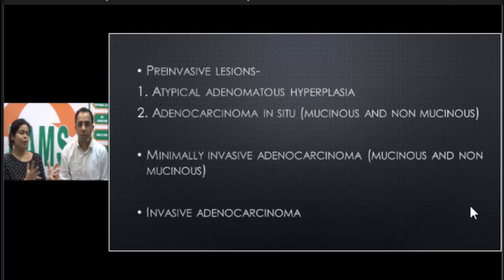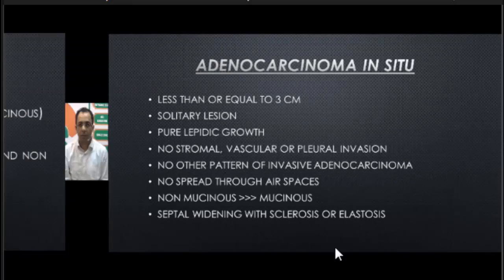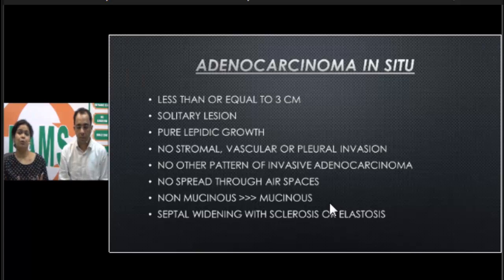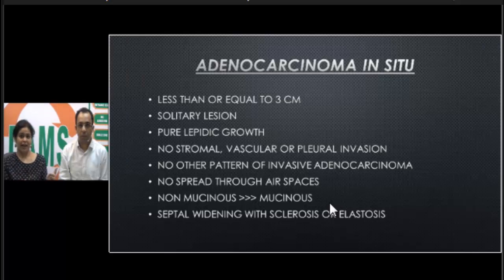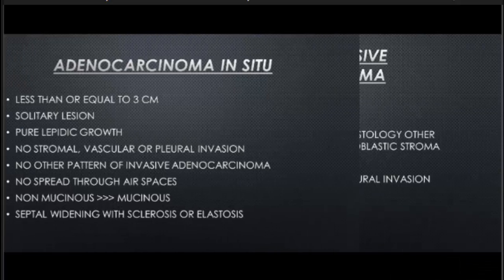The term bronchoalveolar has been changed based on its growth pattern. Adenocarcinoma in situ is now defined as: ≤3 cm, a solitary lesion, with pure lepidic growth — it uses alveolar walls for support but causes no stromal invasion, vascular invasion, or pleural invasion. There is no other histological type, no spread through air spaces, and non-mucinous type is slightly more common than mucinous. Septal widening and slight sclerosis may be present, but there is no invasion at all.